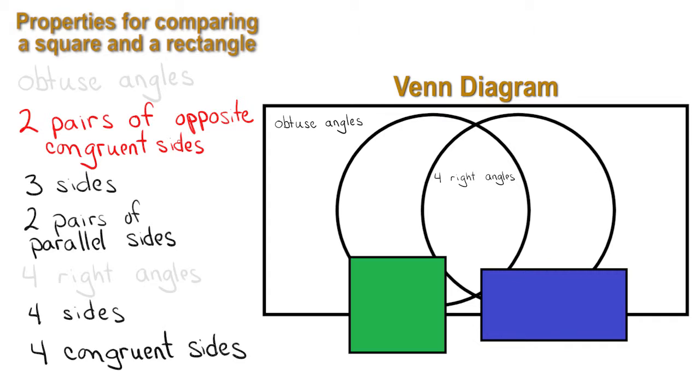Two pairs of opposite congruent sides is the next one on the list. Look carefully at our shapes. Which shape has that property? Do they both have that property? Both the square and rectangle have that property.